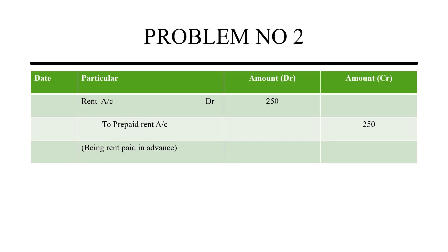The last one is: rent paid in advance Rs. 250. In that case, debit all expenses and losses, credit all income and profit. Rent paid in advance is an expense, so the rent account has been debited to prepaid rent. That is why we will get the benefits in the future, and that is why we will get the credit. The narration given is: being rent paid in advance.